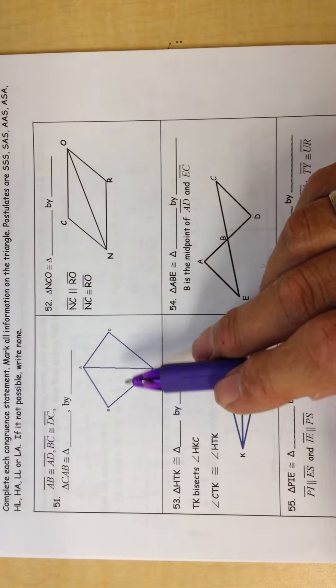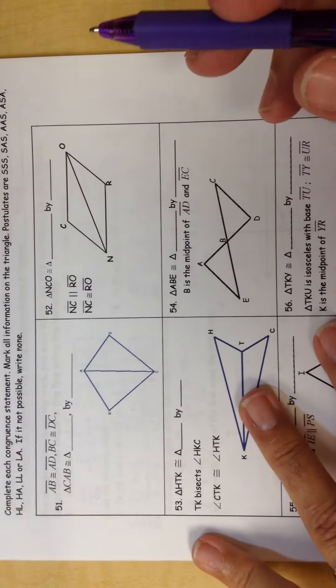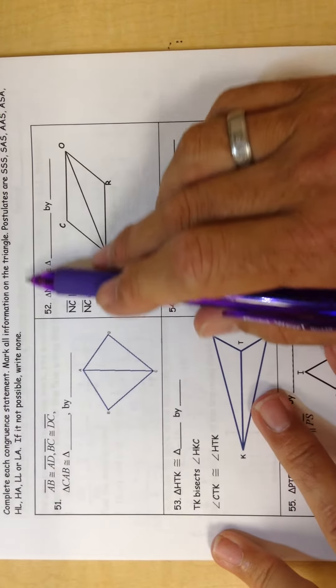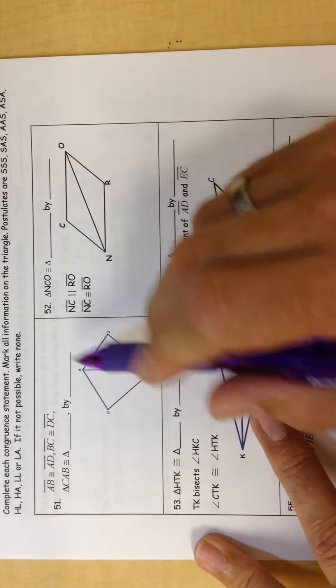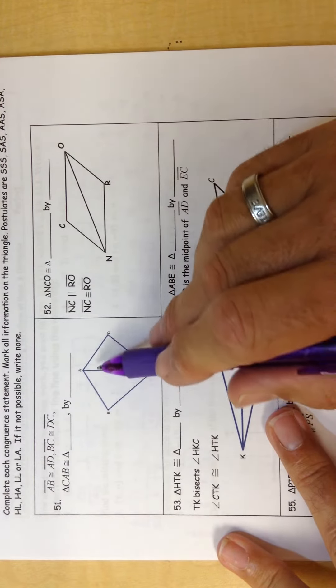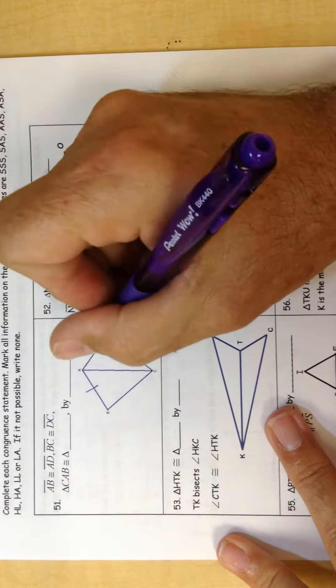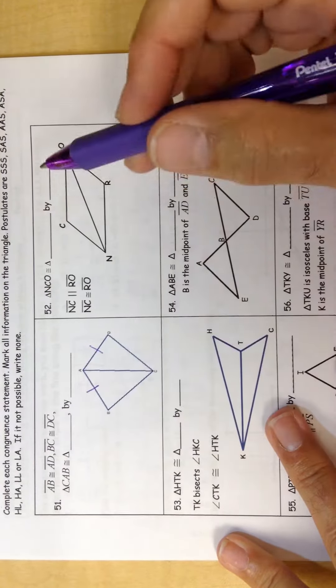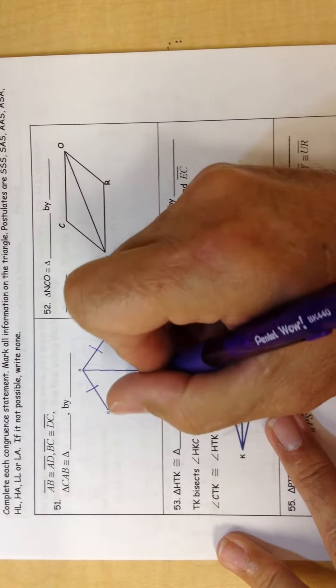Okay, number 51. Let's see. AB is congruent to AD, and BC is congruent to DC. So I know this and this.